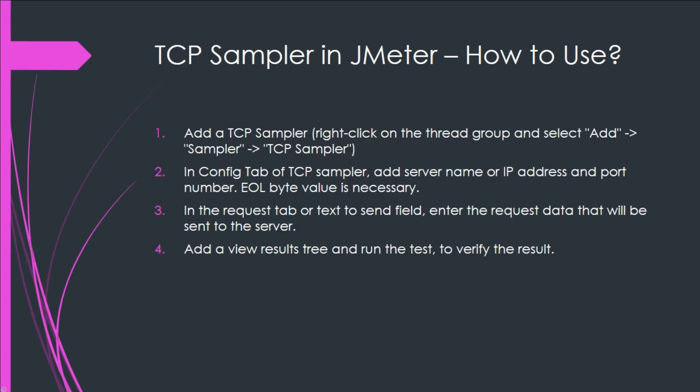First, we need to add a TCP sampler to our JMeter test plan. To do this, right-click on the thread group and select Add > Sampler > TCP Sampler.